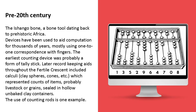Pre-20th century: the Ishango bone, a bone tool dating back to prehistoric Africa. Devices have been used to aid computation for thousands of years, mostly using one-to-one correspondence with fingers. The earliest counting device was probably a form of tally stick. Later record keeping aids throughout the Fertile Crescent included calculi — clay spheres, cones, etc. — which represented counts of items, probably livestock or grains, sealed in hollow unbaked clay containers. The use of counting rods is one example.